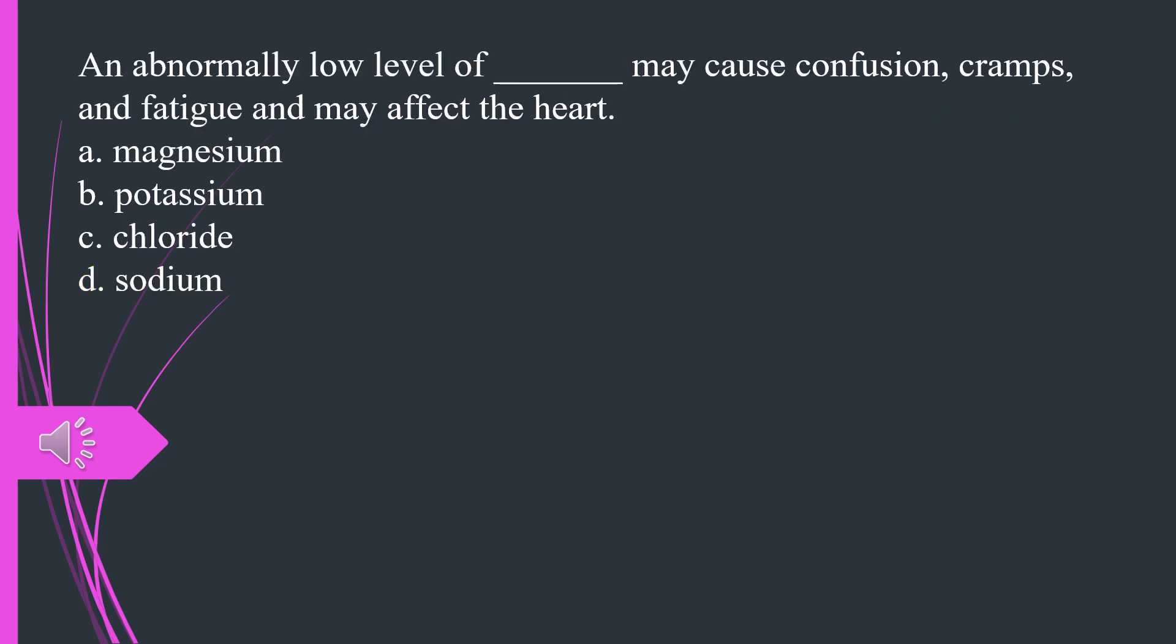An abnormally low level of what may cause confusion, cramps, and fatigue and may affect the heart. A. Magnesium B. Potassium C. Chloride D. Sodium. The answer is B, potassium.